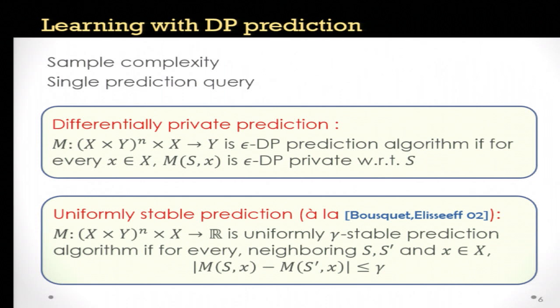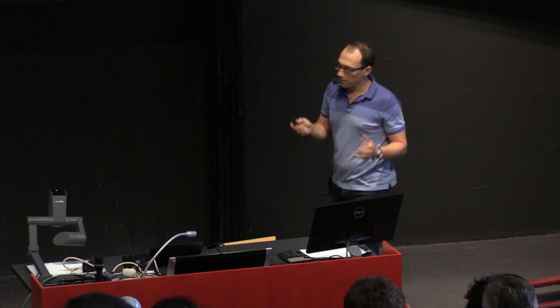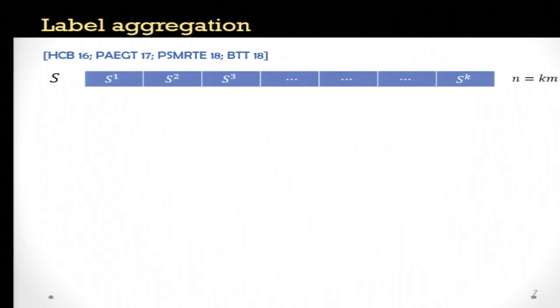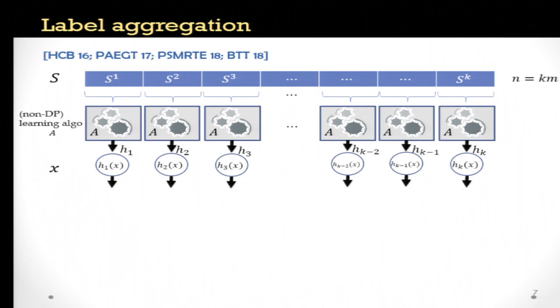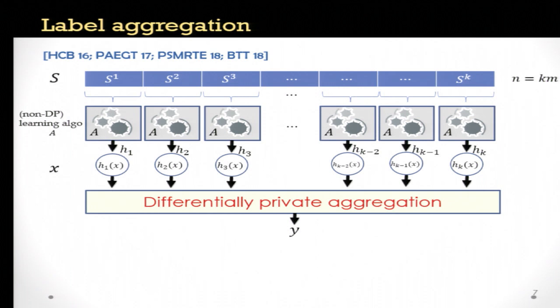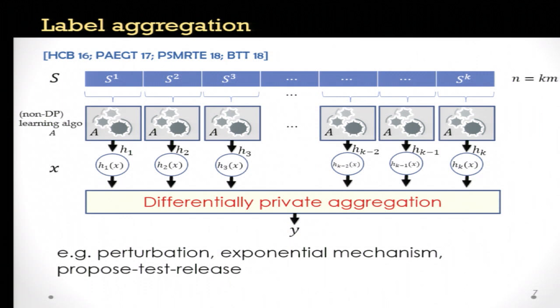We first look at a simple approach called label aggregation, which has been studied in the context of other privacy problems. You split your data set into k parts, run your non-private algorithm on each part separately, then for a query point you evaluate the k hypotheses on that point and aggregate the labels in a private way — using, for example, the exponential mechanism or propose-test-release. It doesn't need to know anything about the algorithm A, but if the algorithm has additional properties like uniform stability, these can be exploited.